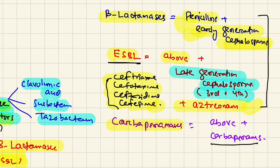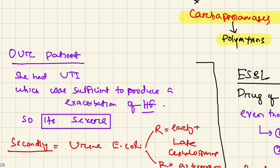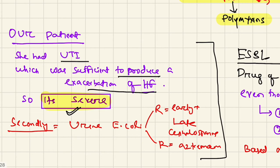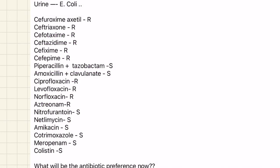In our patient, the UTI is sufficient to produce exacerbation of heart failure, so this is a severe infection. The patient developed E. coli in urine. Looking at the antibiogram, the E. coli is resistant to cefuroxime, a second generation cephalosporin.